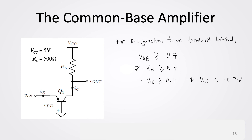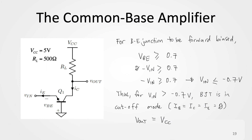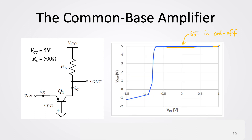Since VIN must be less than negative 0.7 volts for the base-emitter junction to be forward biased, when VIN is greater than negative 0.7 volts the BJT is in cutoff mode. In cutoff, all currents are zero, so there is zero voltage drop across RL, and Vout is pulled up to VCC. On the plot, for VIN greater than negative 0.7 volts, Vout equals VCC — in this case 5 volts.